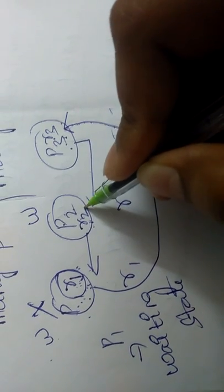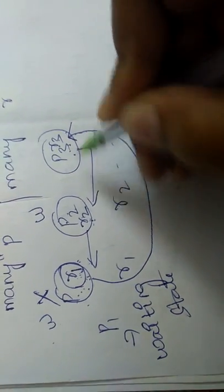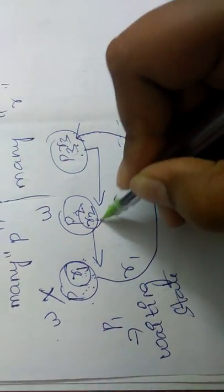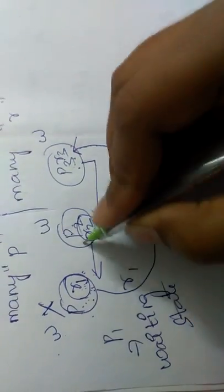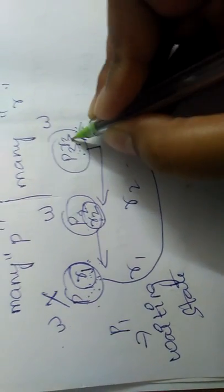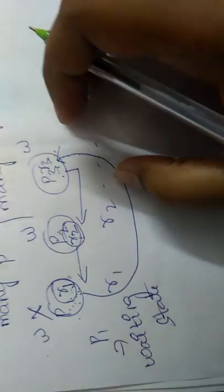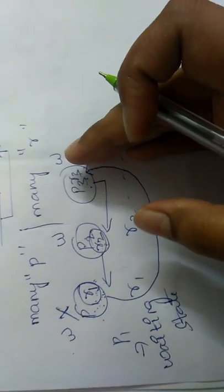Process three is requesting for resource two, but process two is already using resource two, so it also went to the waiting stage. All three processes are now in the waiting stage — this is a deadlock situation. P1 cannot get resource three, P2 cannot get resource one, and until one releases a resource, the others cannot come out of the waiting stage.